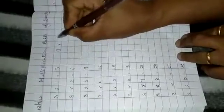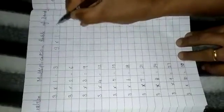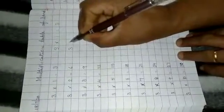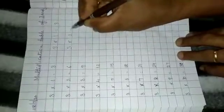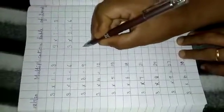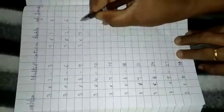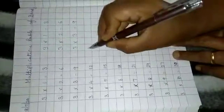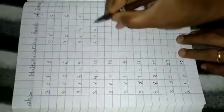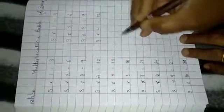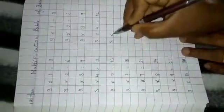3 1s are 3. 3 2s are 6. 3 3s are 9. 3 4s are 12. 3 5s are 15.